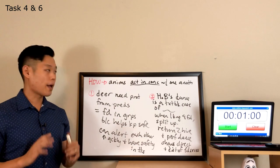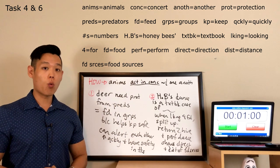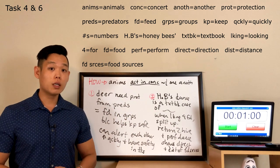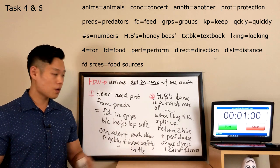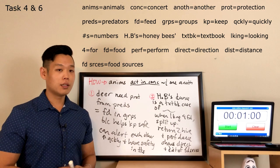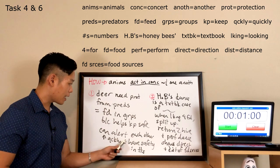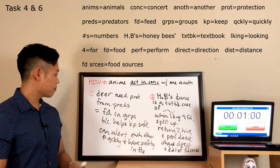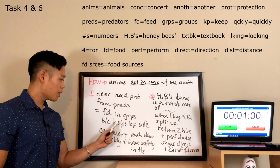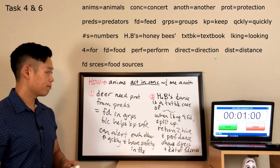In this lecture, the professor talked about how animals act in concert with one another. Act in concert means cooperate. The first example was about deer, and the second example was about the honeybees dance. So, if I have too much time left after I'm done summarizing the lecture's information, I'm going to say which was illustrated by deer and the honeybees dance to eat up the extra seconds that I have left. Now let's look at the really important part, the core of our response. Deer need protection from predators, so feed in groups because it helps keep them safe. They can alert each other more quickly and have safety in numbers.